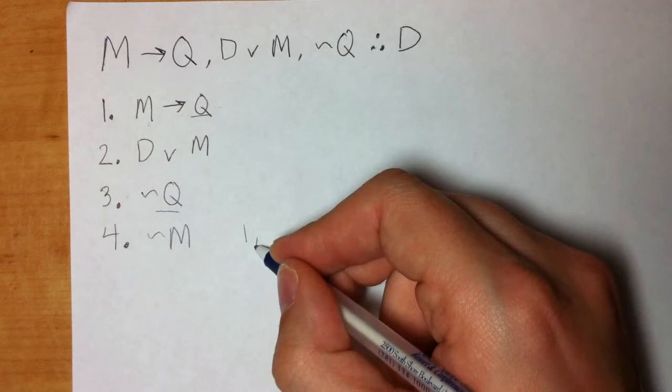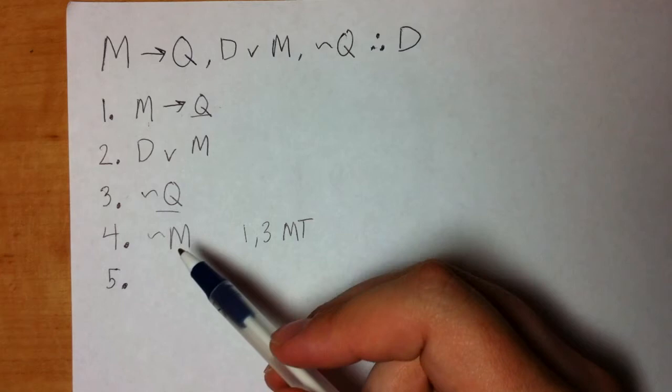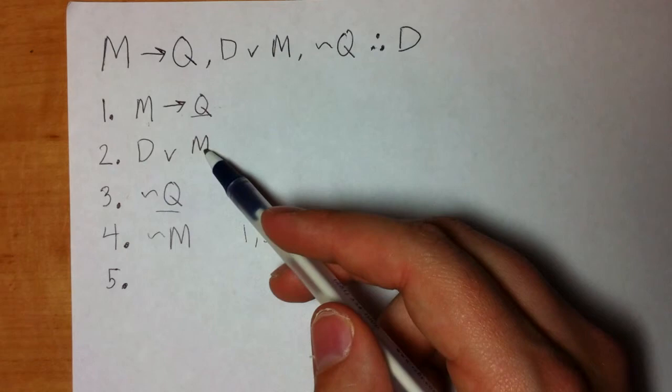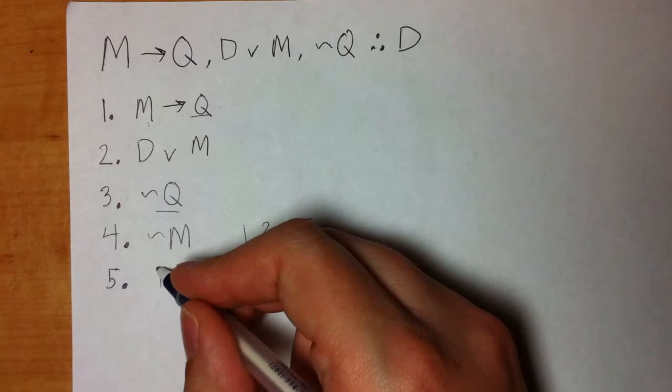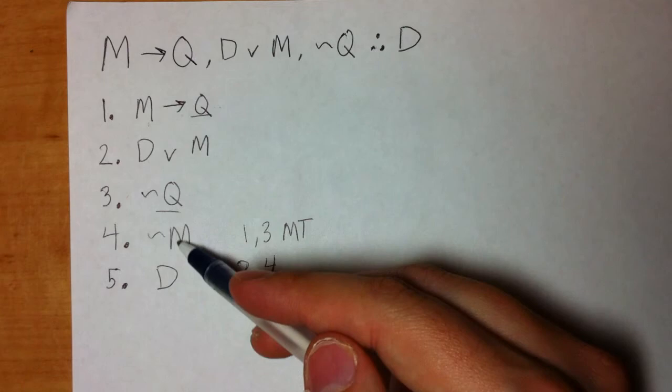And line five, what can I do now? Maybe now that I have tilde M, what can I do? Well, again, looking for that pattern, I maybe look, oh, look right here. D wedge M, tilde M. So the answer to the test is dogs, or the answer to the test is mammals. Well, the answer to the test is not mammals. So that leaves us only with dogs. And line two is the disjunction. Line four was the denial of one of the disjuncts, said properly. And that rule was DS. And we know we're done, because we got the conclusion. So we stop. Let's try one more.